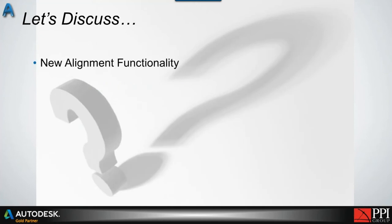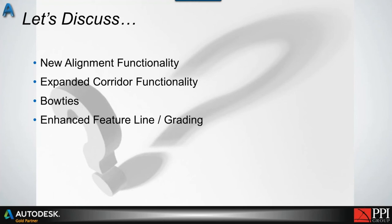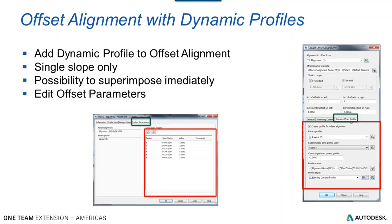What I'll be kind of poking through here is talking about new alignment functionality, expanded corridor functionality — there are actually quite good ones in there. Bow ties, which came out in 2017, had an automatic fix, but I'll show you a little bit more here in a minute. And then enhanced feature line and grading.